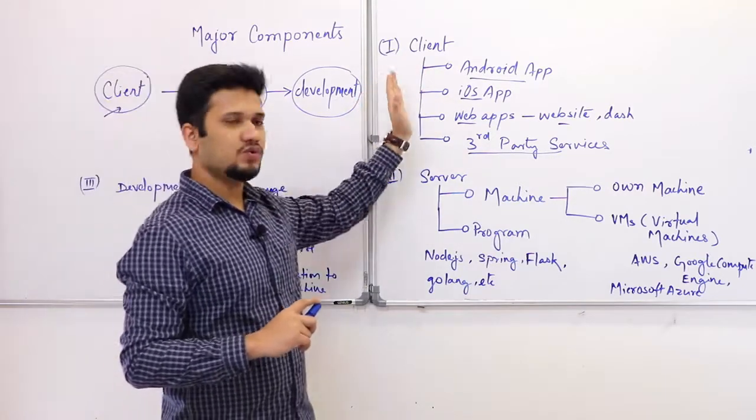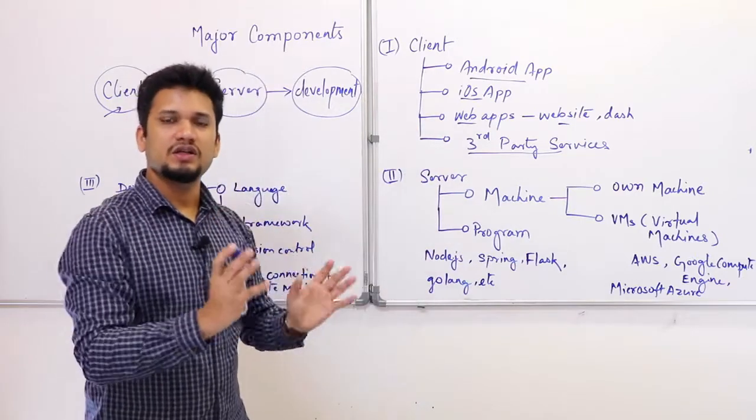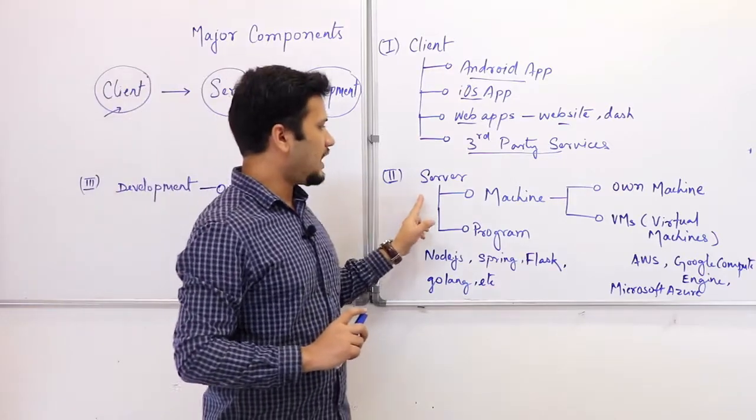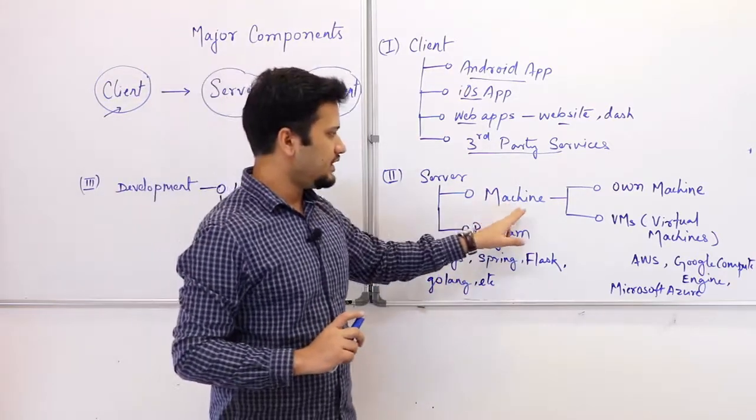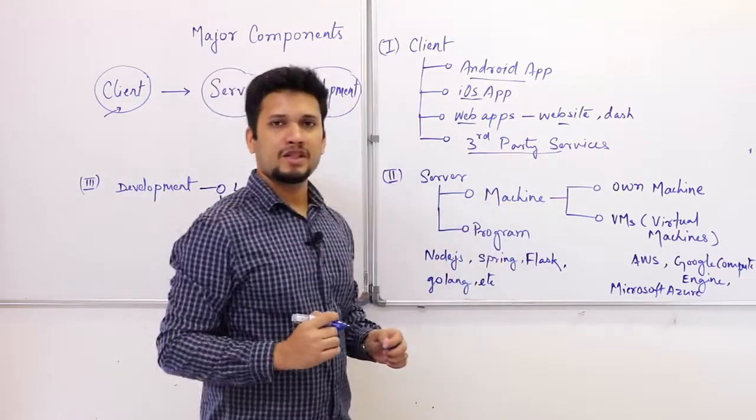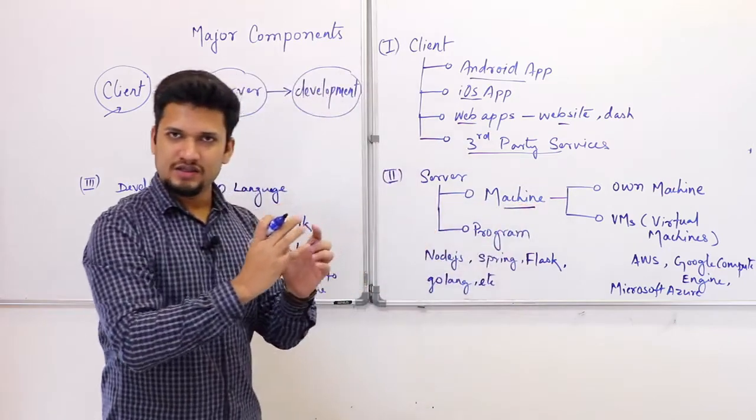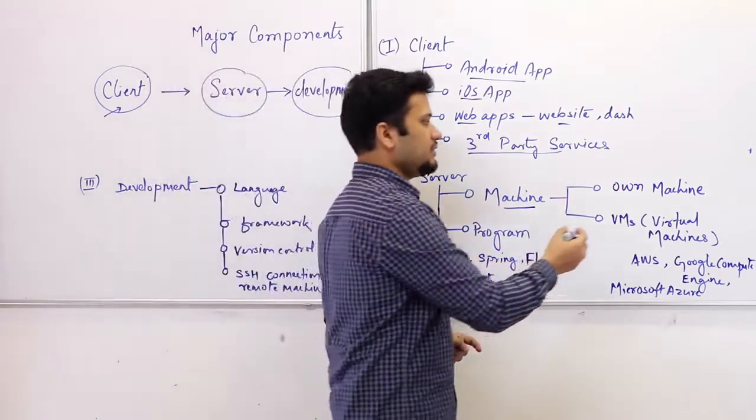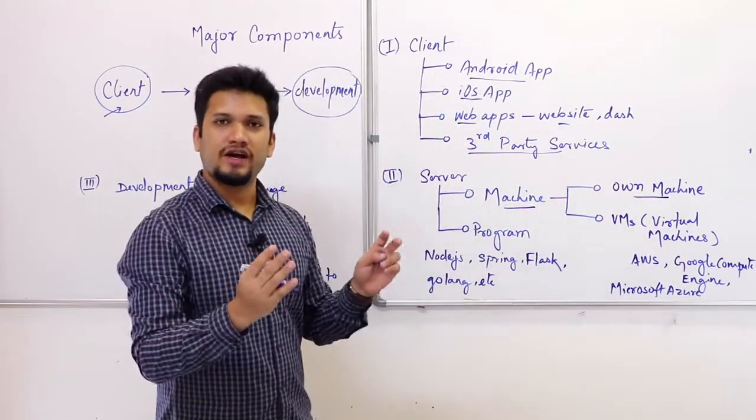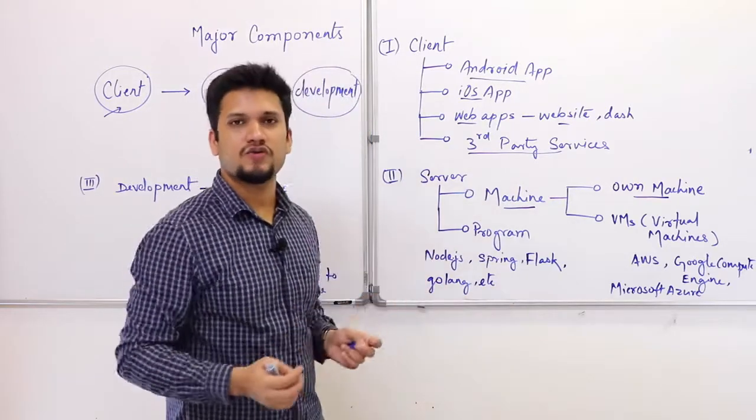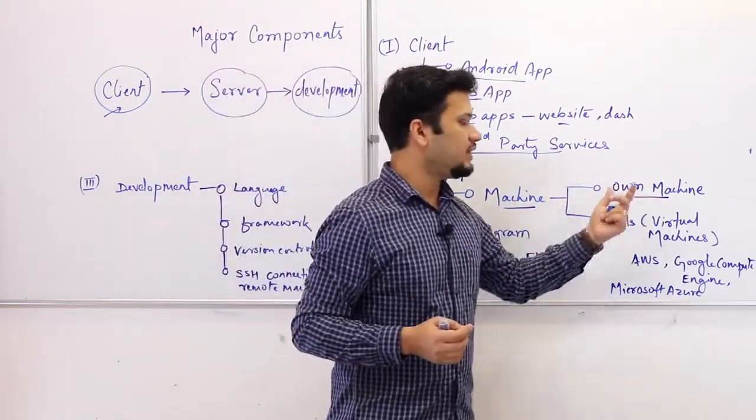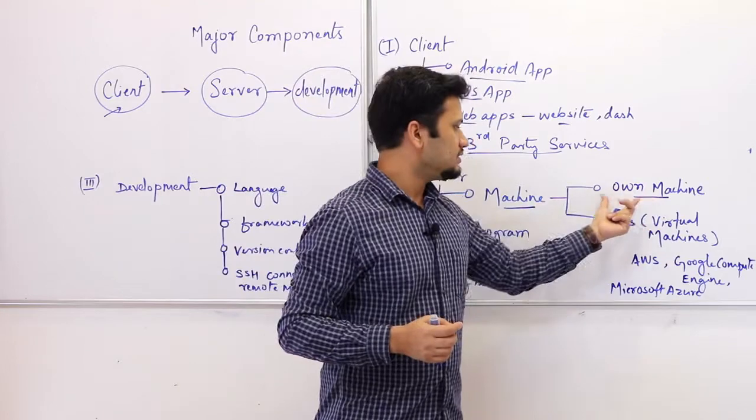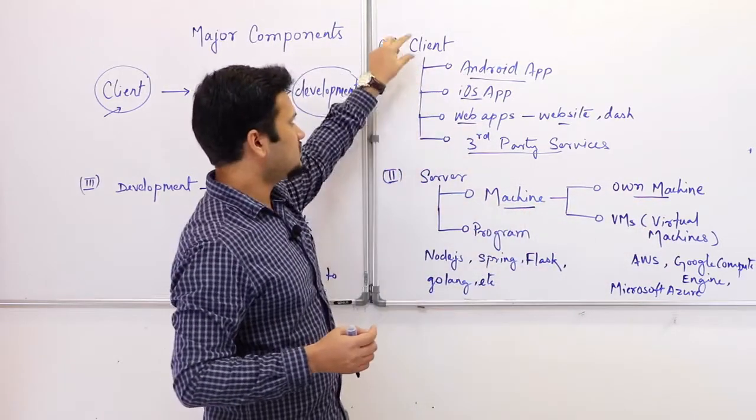First we have our client. Client is going to connect with our resources that is in our server. What does this server constitute of? Server will have two things: first is machine and the program. Machine is the physical device on which your program runs. This machine can be your own machine. For example, you want to have a physical server at your own house or company, you can have that. This machine may be running like Ubuntu server on that and you can access that machine for these clients.